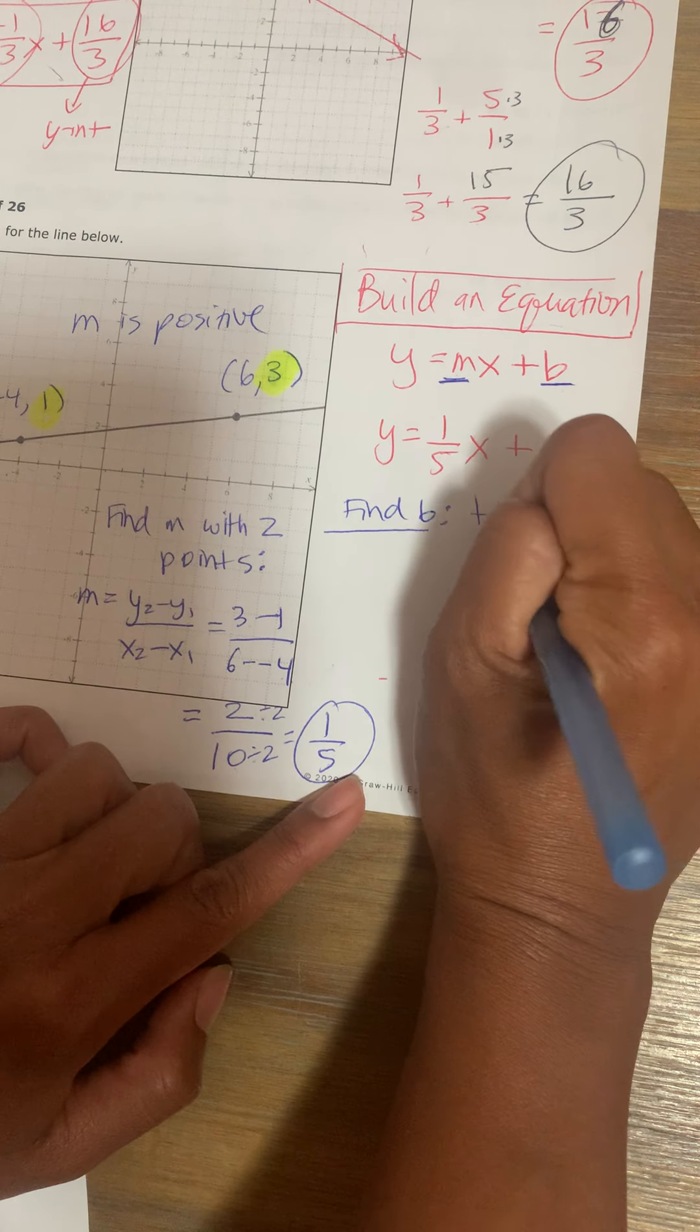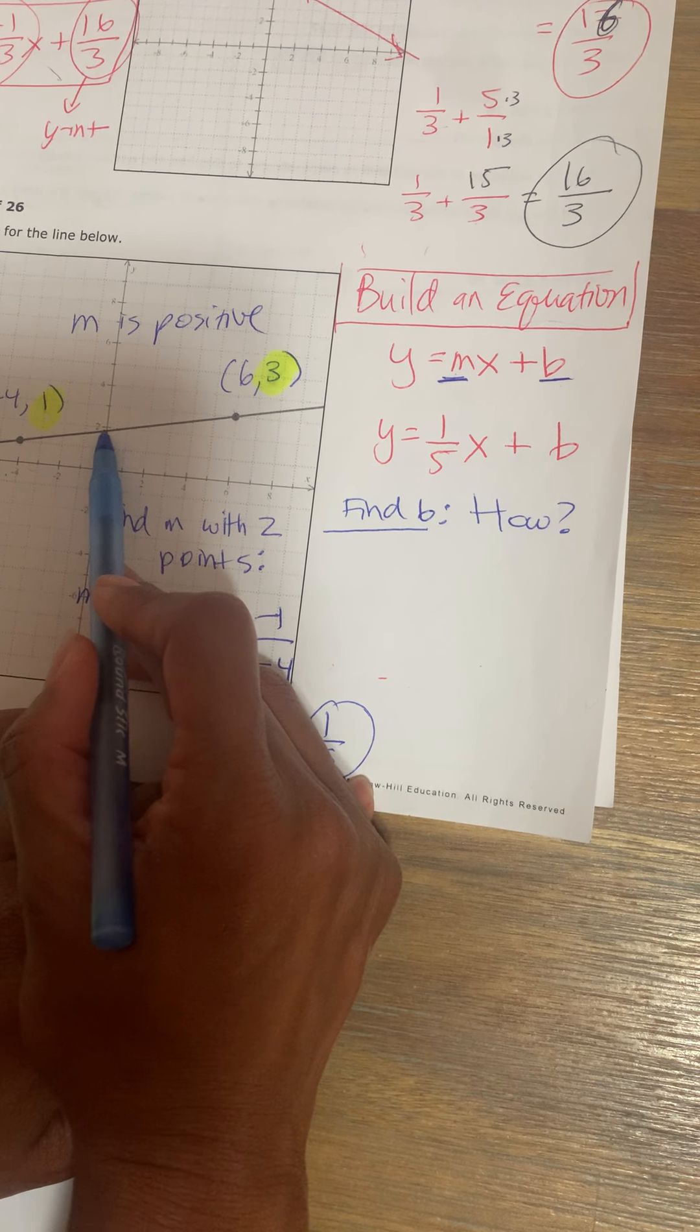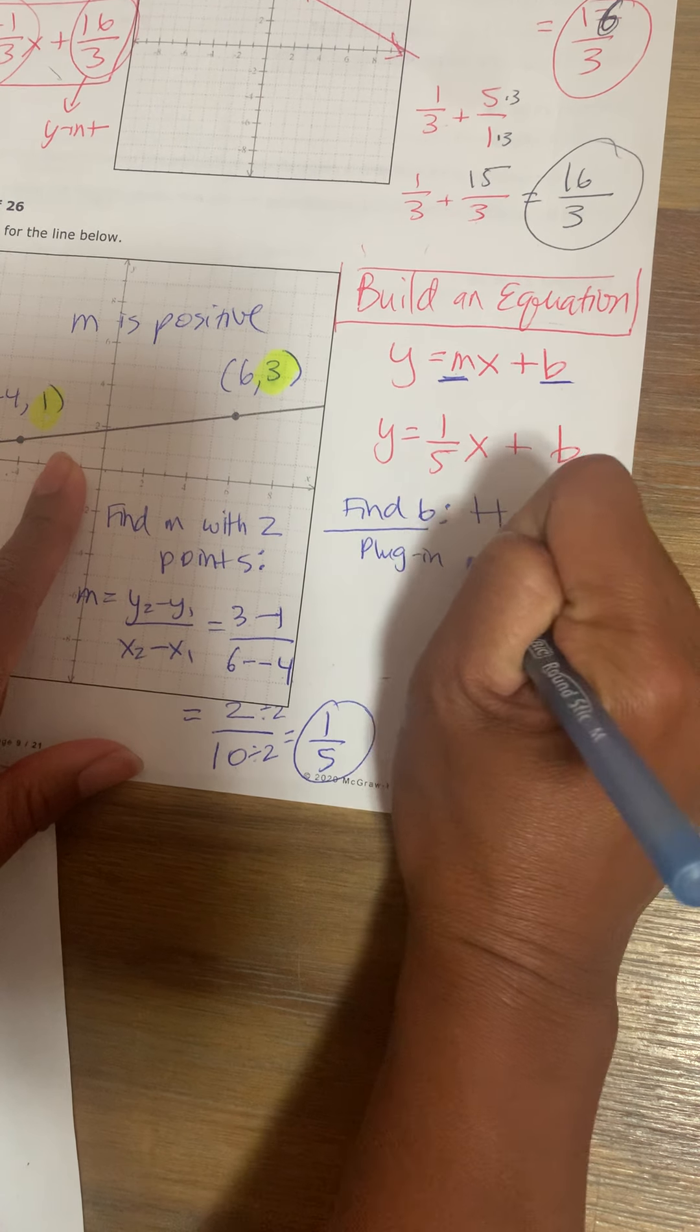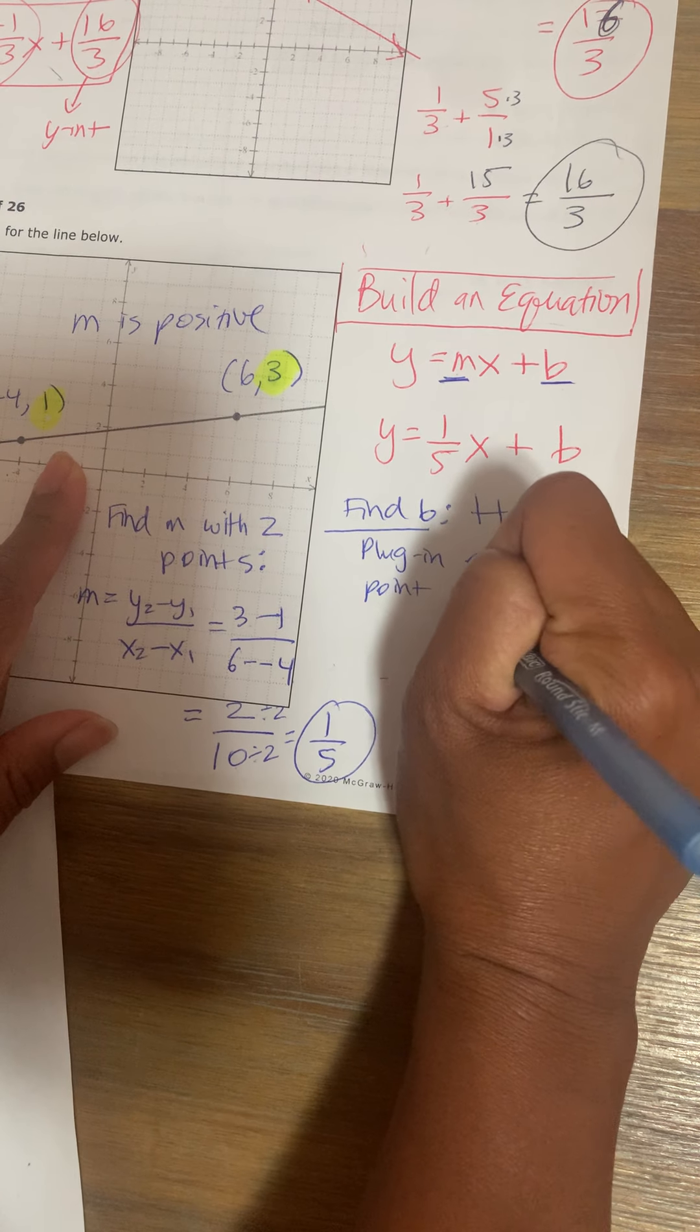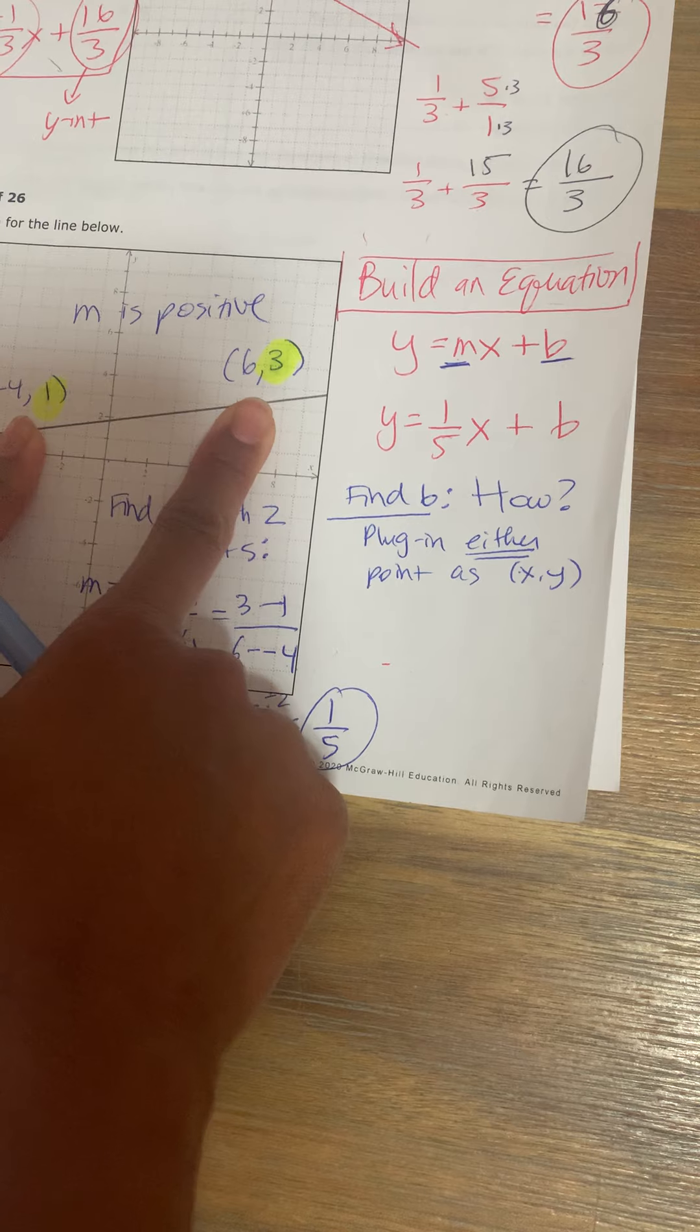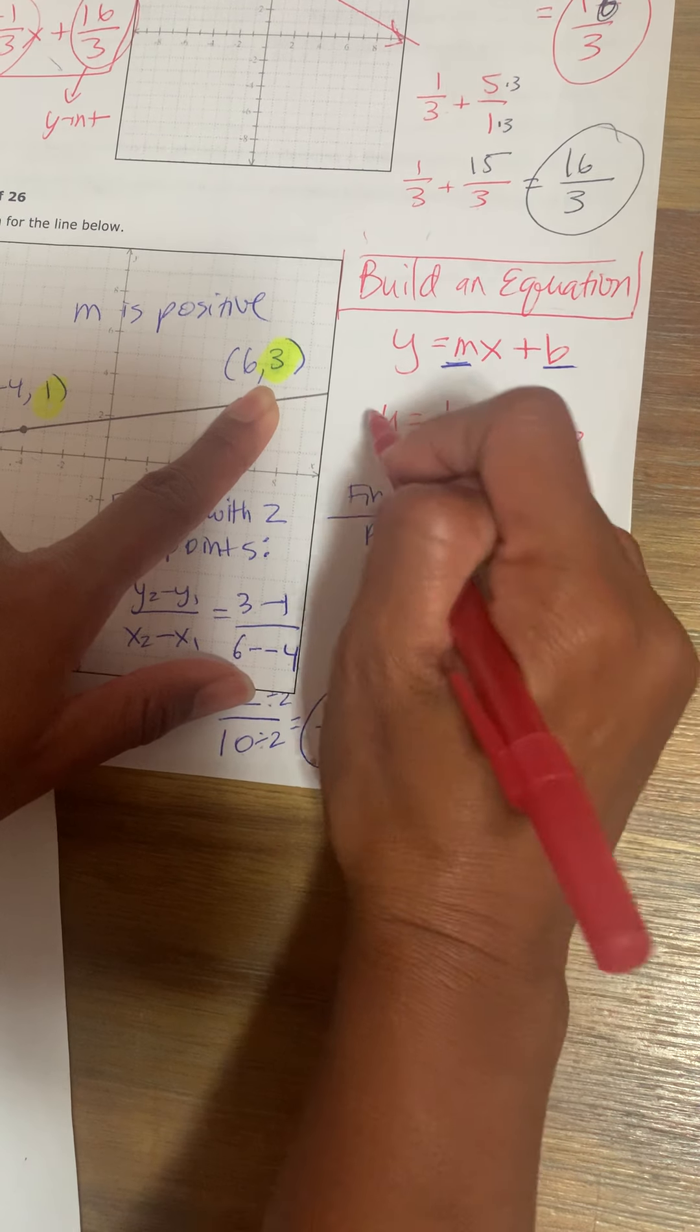How do you find out what b is? b looks like it's 1.9 or something, but we can't just guesstimate based on looking at it visually. We need to know what it is exactly. How you find out exactly what b is, is that you're going to plug in either point as x and y. Whichever point you use, you'll get the same answer. I'm going to use the 6 and 3. So I'm going to plug it into this equation here.